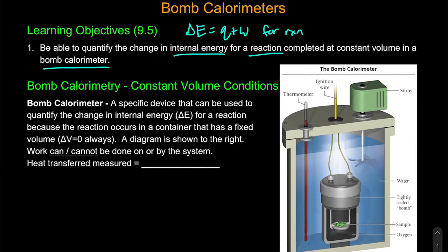So let's do a quick description of what we mean by a bomb calorimeter. Basically we have this rigid container, and inside of that we've got water, and then we have this other very rigid sealed container — what we call the bomb. The reason why we call it a bomb is we have a constant volume of our reaction. Basically we're going to have some reaction occur and we're not going to allow the volume to expand; it's just going to be stuck in this constant volume container.